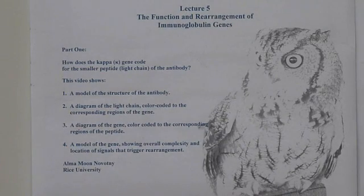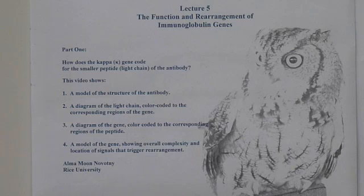Welcome. This is the first of a series of supplementary videos on Lecture 5, the Function and Rearrangement of Immunoglobulin Genes. In this case, we're going to start looking at exactly what parts of the gene code for what parts of the smaller of the two peptides in the antibody.